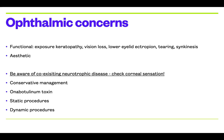Do a complete slit-lamp examination and look for punctate epitheliopathy. Always check corneal sensation — a patient may have coexisting neurotrophic keratopathy, and if that is missed early on, these patients will do much worse. Their management may also be different if they have a neurotrophic keratopathy. The patient will have an incomplete blink, lagophthalmos, and may also have a paralytic ectropion, which is commonly found.